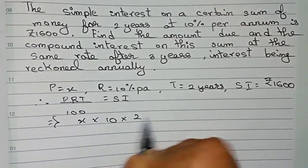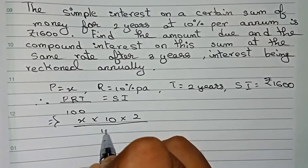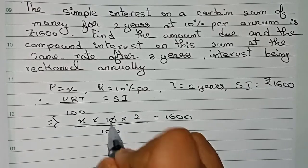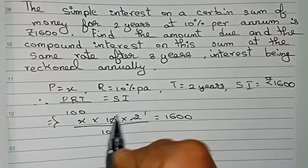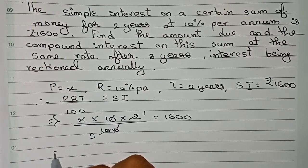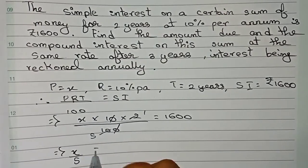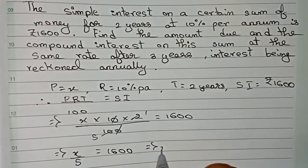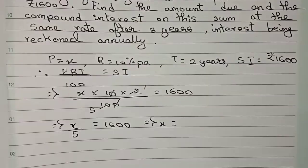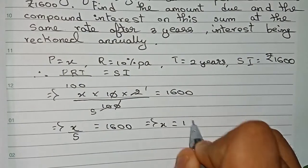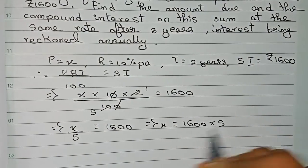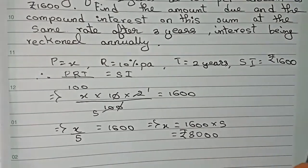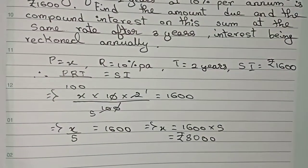Now we cut the zeros. I cut 2 and 10, it becomes 5, so it becomes x/5 = 1,600. Therefore x = 1,600 multiplied by 5, which equals 8,000. So the principal is rupees 8,000. Now we have to find the compound interest for three years.